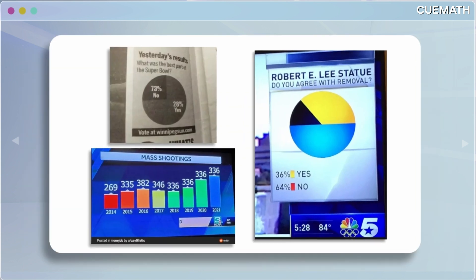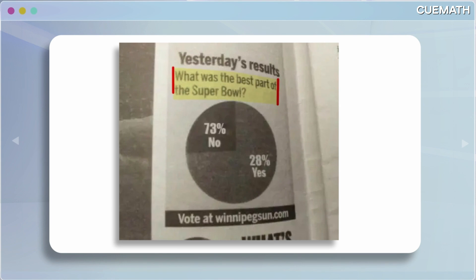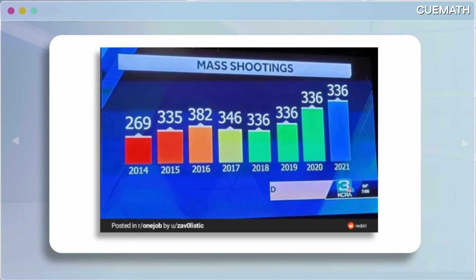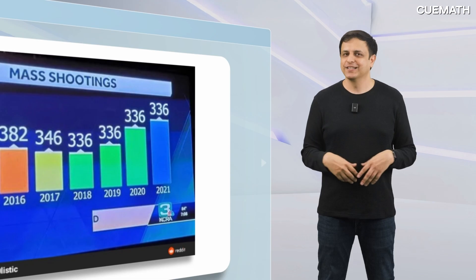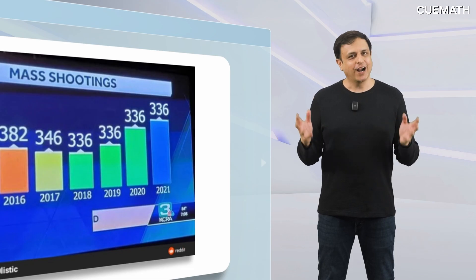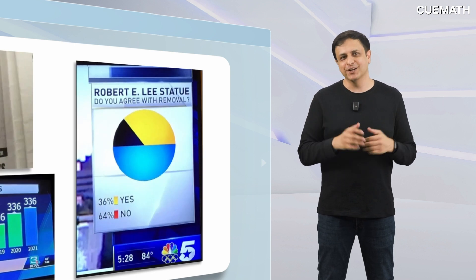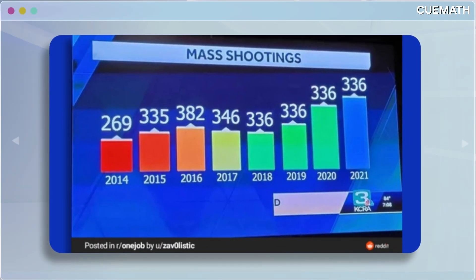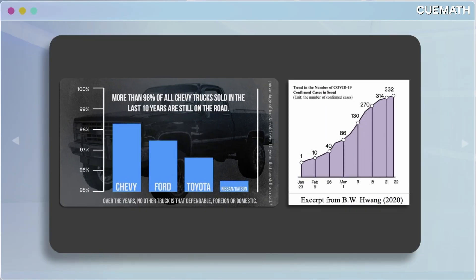Finally, here are a few rather amusing ones. Is that even a yes-no question? What do the black and blue parts even show? And here, 336 seems to be on a journey of its own. So, graphs can mislead us in various ways — some tricks are obvious, while others are sneakily hidden.